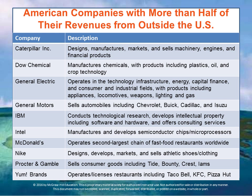This slide shows some American companies that earn more than half of their revenue from outside the United States. Examples include Caterpillar, which makes large machinery like trucks and construction equipment; Dow Chemicals; General Electric; General Motors; IBM; Intel; McDonald's; Nike; Procter & Gamble; and Yum Brands, which owns Taco Bell and KFC. These are US businesses that conduct the majority of their operations internationally.